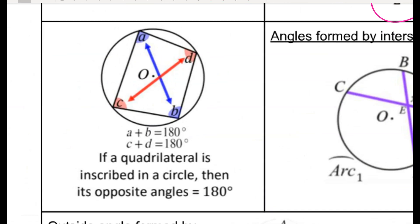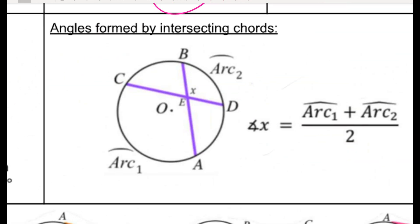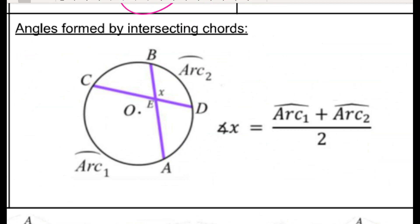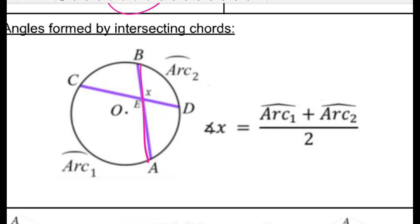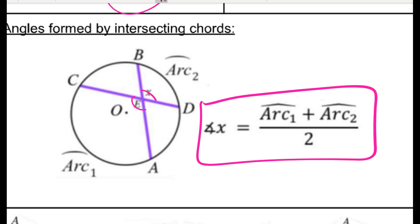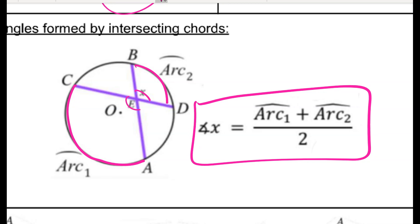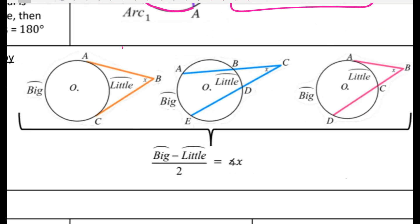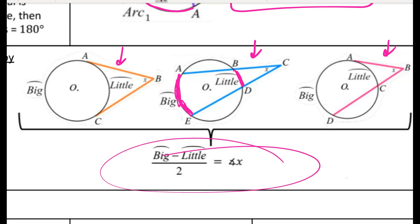One other rule is that for an inscribed quadrilateral in a circle, opposite angles are supplementary — they sum to 180. And if I have two chords intersecting to form pairs of vertical angles, we proved this based on similar triangles, but the rule is that the vertical angle equals the sum of the intercepted arcs divided by 2. That's for an inside angle, as opposed to an outside angle created by two tangents, two secants, or a tangent and a secant, which is the big arc minus the little arc divided by 2.